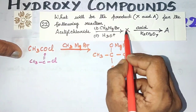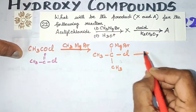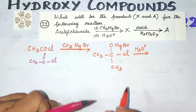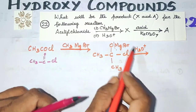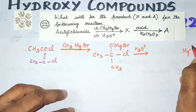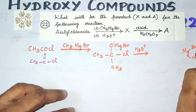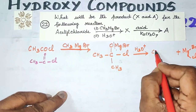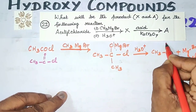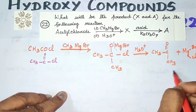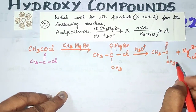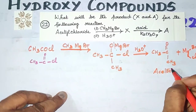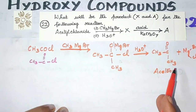Now if we hydrolyze this intermediate with H₃O⁺, the MgBr and Cl leave as MgBrCl. The remaining compound is CH₃–CO–CH₃, which is a ketone — that is acetone, also known as propanone or dimethyl ketone.